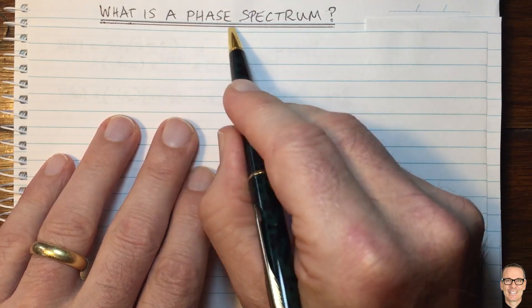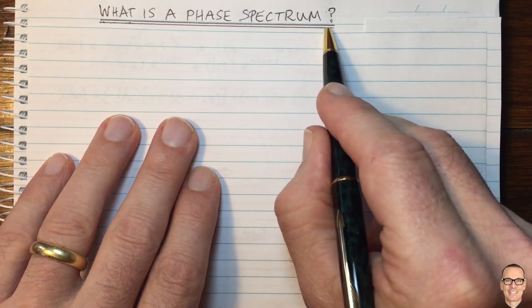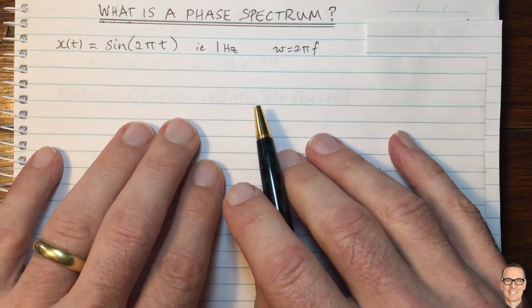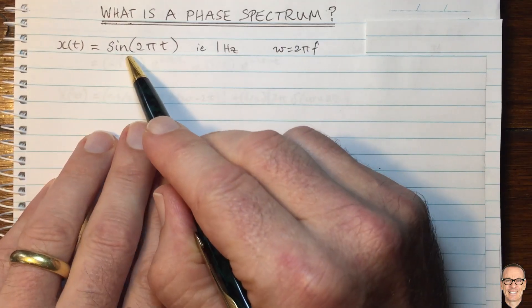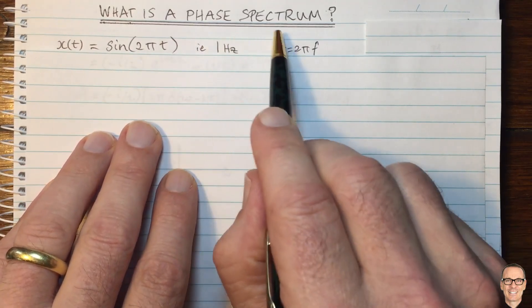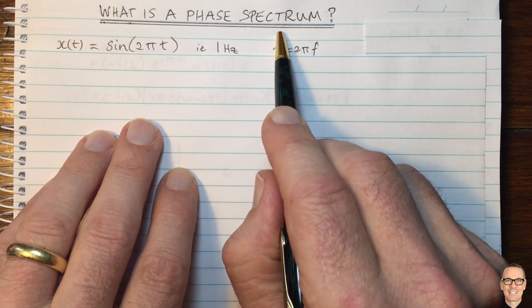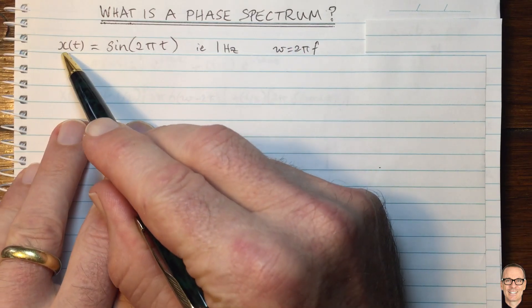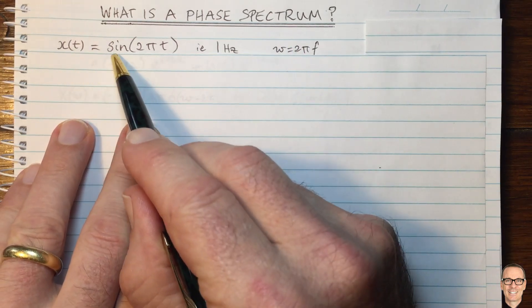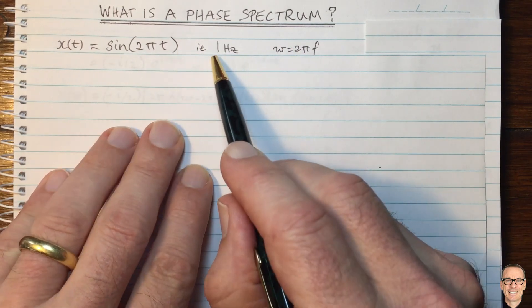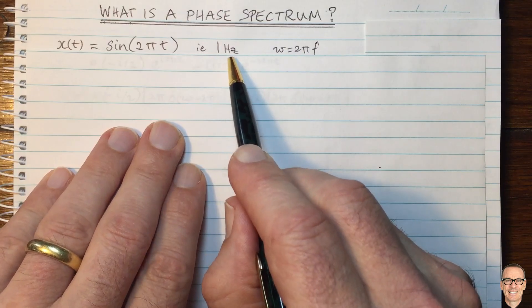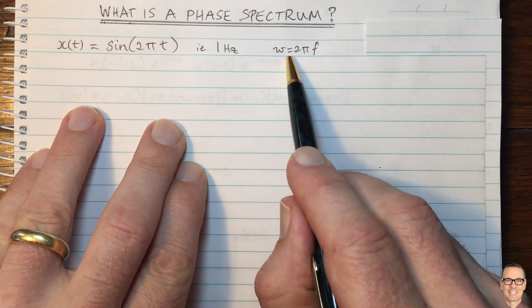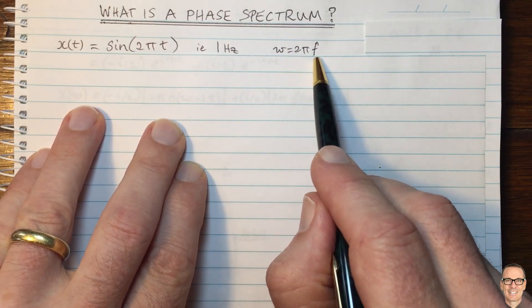What is a phase spectrum? We're going to start by looking at a sinusoidal signal and then show what the phase spectrum is and explain why it's important. So here we have x of t equals sine 2 pi t — a 1 hertz sinusoid because omega equals 2 pi f.